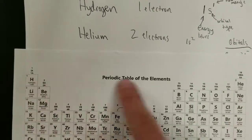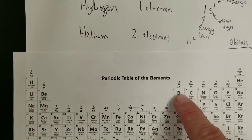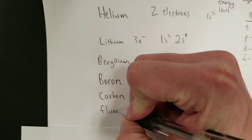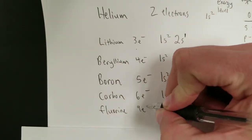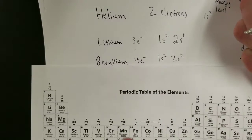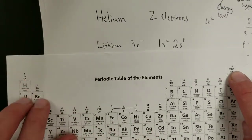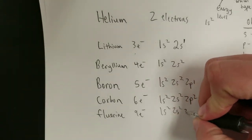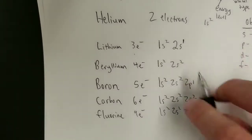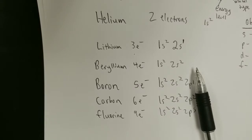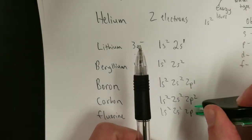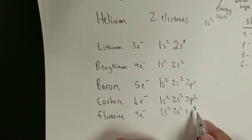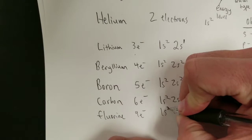For fluorine, with its nine electrons: 1s2, 2s2, 2p5. That's nine electrons total — this is just telling you how they're arranged.